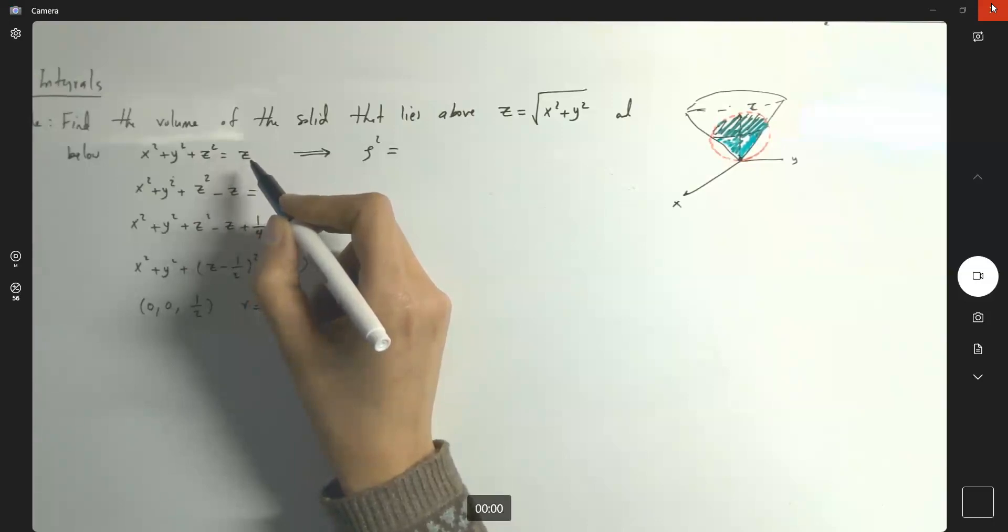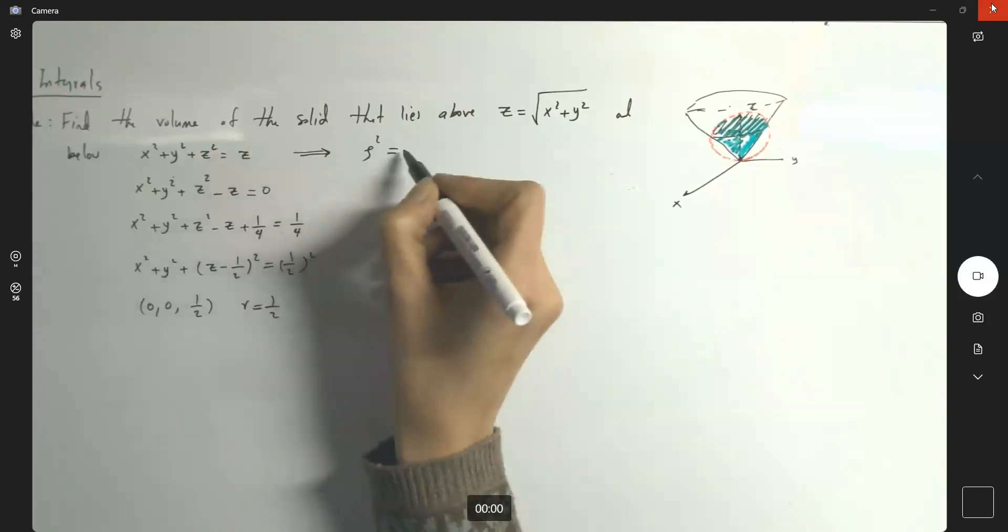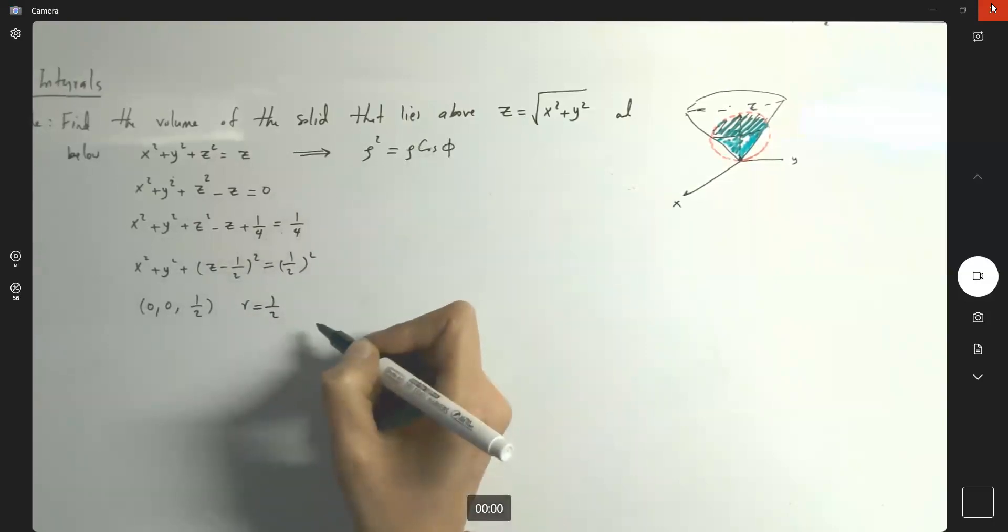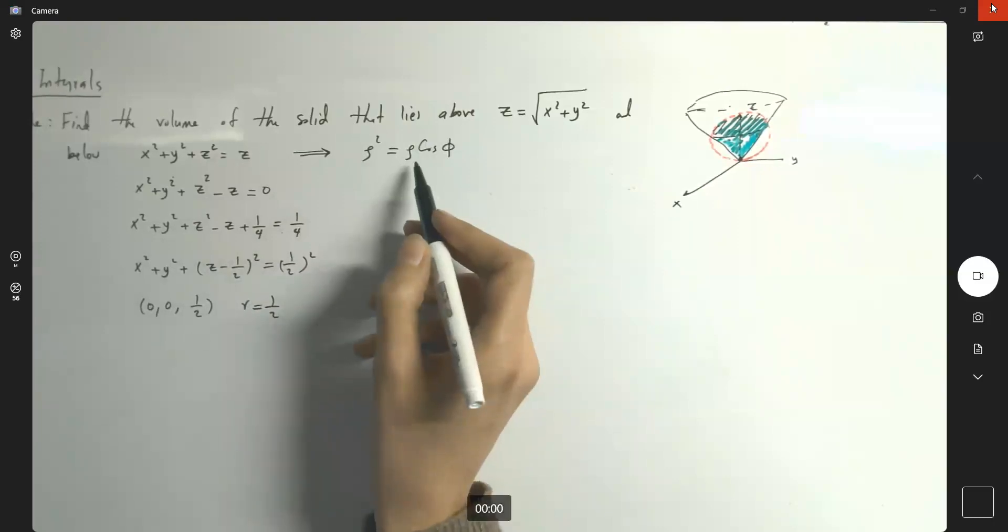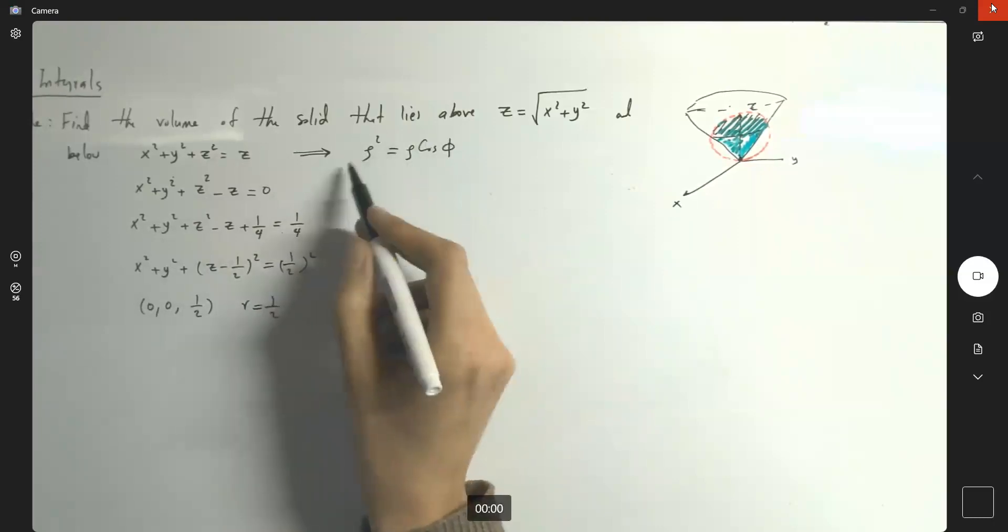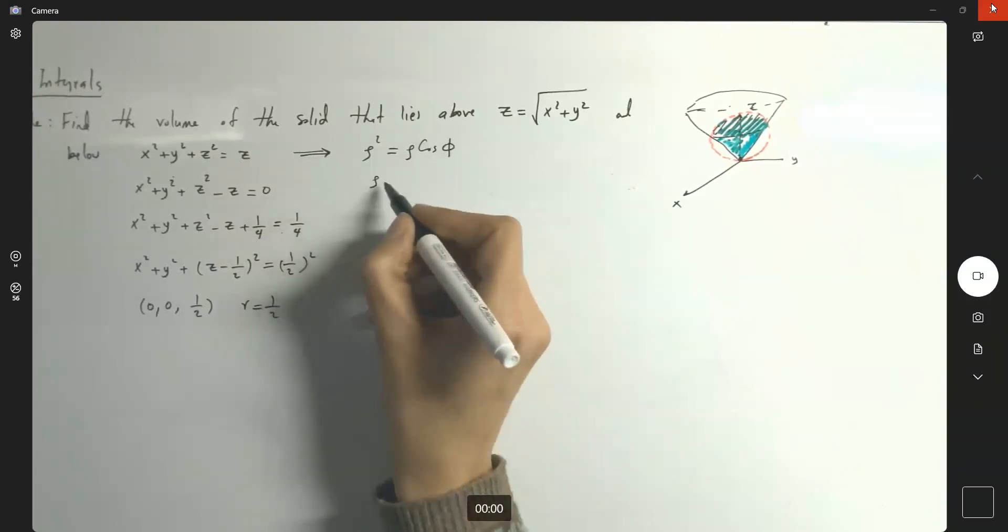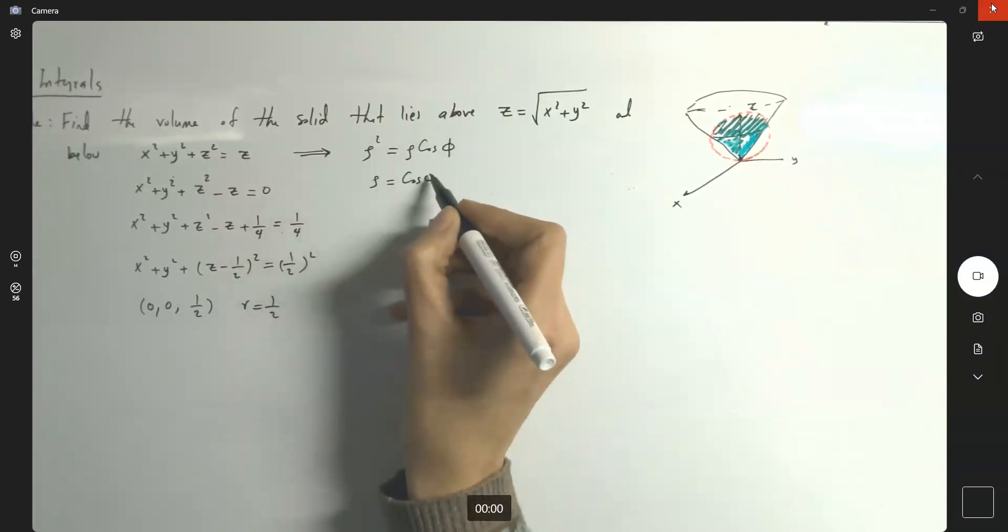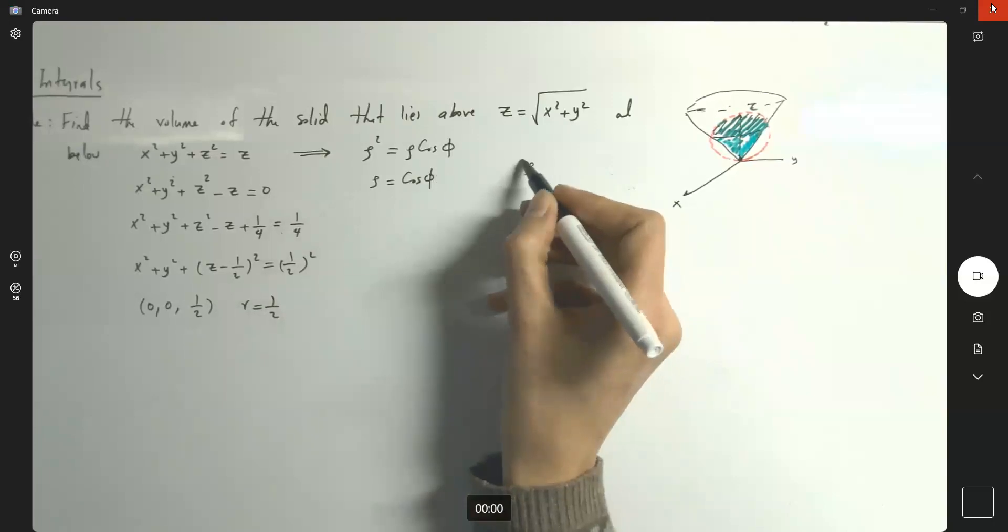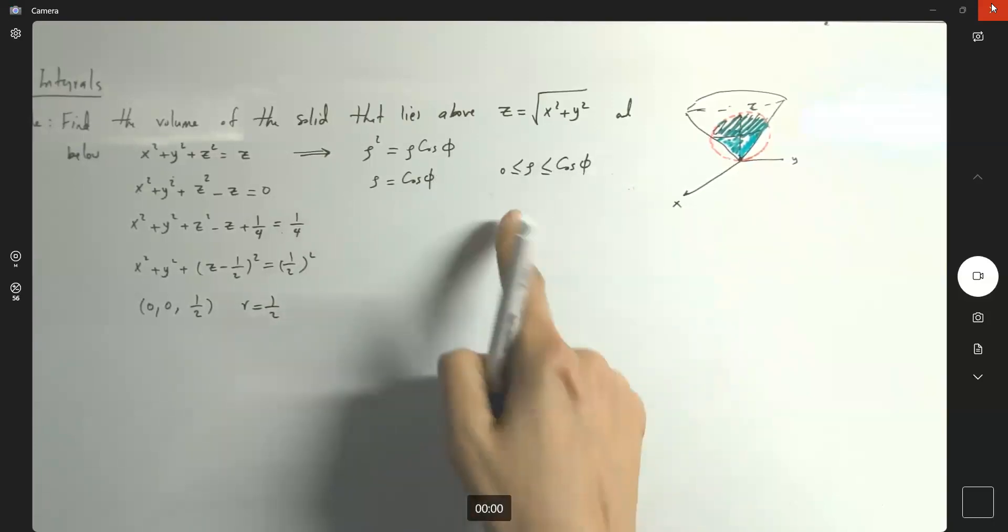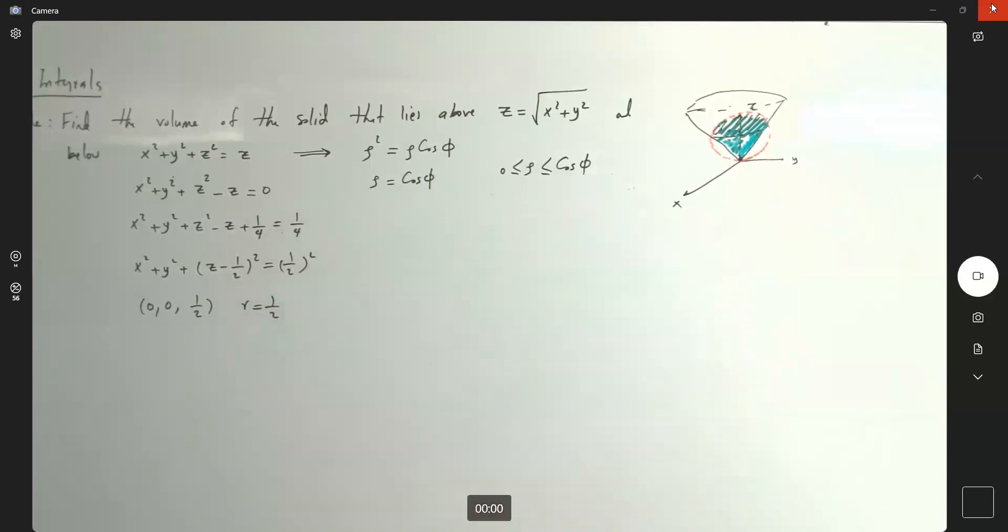Here you have a relation between rho and phi. So your z was defined as rho cosine phi. So here you can see that if I bring rho cosine phi to the other side, or simplify that, rho equals cosine phi. What do you see? You see rho is bounded between zero and cosine phi. This is the boundary that you have for your rho.